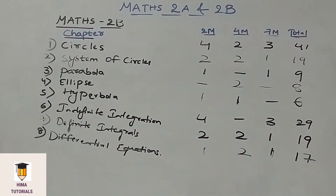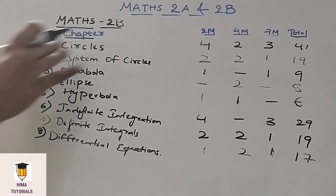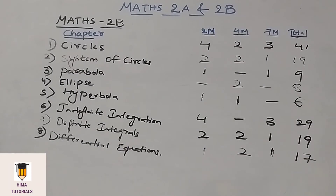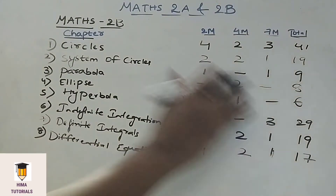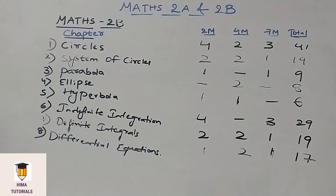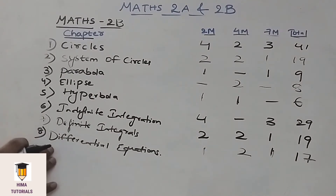If you observe the Weightage of Maths 2B, the highest weightage is given to the Circles chapter. If you prepare this chapter, then you get almost 41 marks. Next priority is given to Indefinite Integration — we get 4 two-mark and 3 seven-mark questions, meaning a total of 29 marks from this chapter. Coming to Definite Integrals, we get 2 two-mark, 2 four-mark, and 1 seven-mark question, giving a total of 19 marks. If you prepare these 2 chapters, you will get a total of 48 marks. Next priority is given to System of Circles — we get 2 two-mark, 2 four-mark, and 1 seven-mark. Students who are preparing for the examination, just go through this Weightage Distribution once.